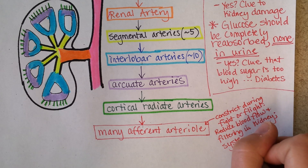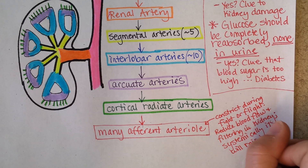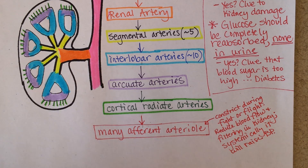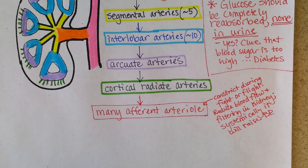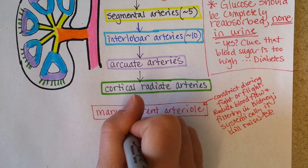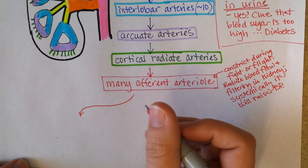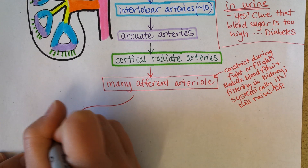Basically the body is saying — and the kidney is playing its part — we don't need to be filtering blood and making urine in the next hour because we're just trying to stay alive. Then the afferent arteriole goes to the glomerulus, which is the site of filtration — the glomerular capillary bed, the site of filtration. Blood that isn't filtered at that point, so all the blood cells, will then continue to what's called the efferent arteriole.